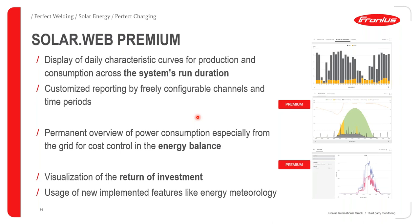With a premium account, you get a display of daily characteristic values for production and consumption across the entire system run duration — data for the last one year, five years, depending on system operation. You also get very customized reporting by freely configurable channels and time periods, as inverters have quite a number of channels that can be configured to filter data into SolarWeb.